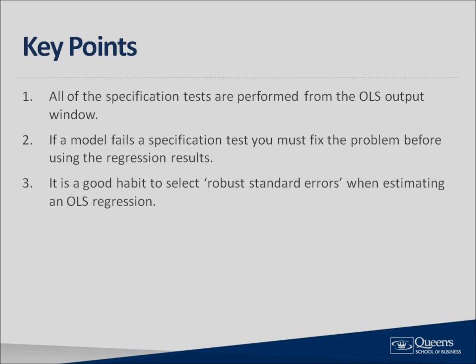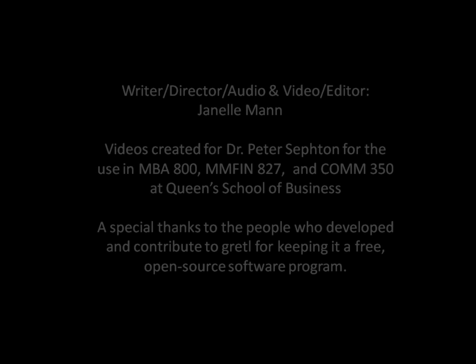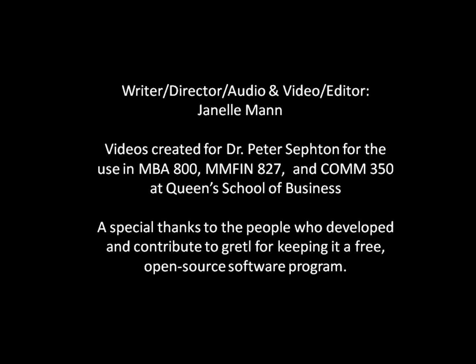We have now finished learning how to use Gretl to perform four specification tests. Before wrapping up the video, let me summarize the three key points to remember. Number one, all of the specification tests are performed from the OLS output window. Number two, if the model fails a specification test, you must fix the problem before using the regression results. And number three, it is a good habit to click Robust Standard Errors when estimating an OLS regression. This concludes the fourth video in this series.